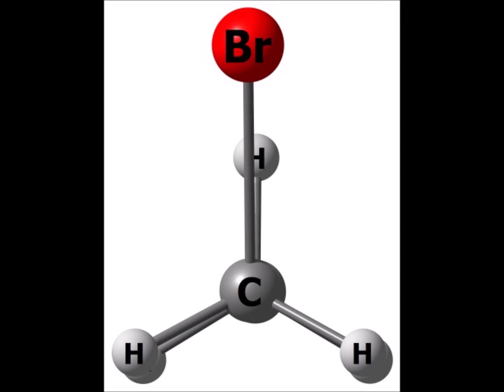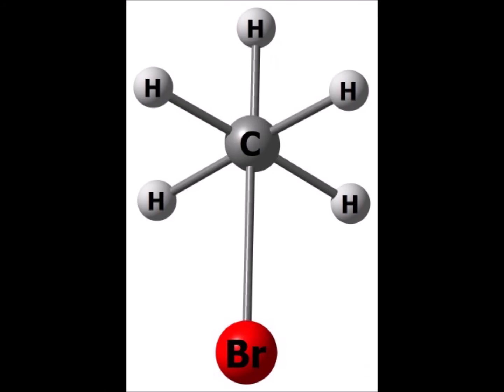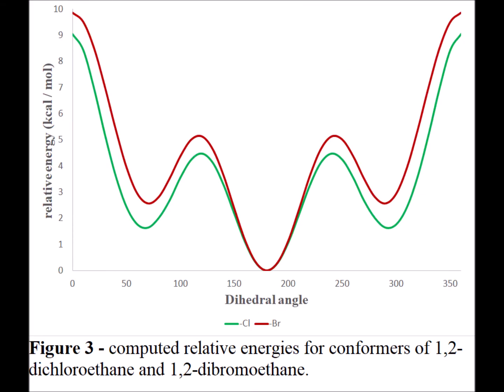For bromoethane, the energy maximum is the eclipsed conformation and the minimum is the staggered conformation. Now we want to look at the case of the 1,2-dihalogenated substituted ethane and see how the energy changes as we vary the torsion angle. In Figure 3, for the 1,2-dichloro and the 1,2-dibromoethane, there are still 3 energy minima, but they are not all equal as they were for the unsubstituted or monosubstituted ethane.